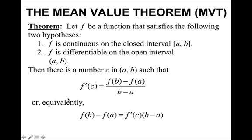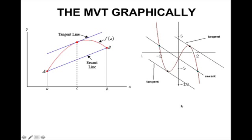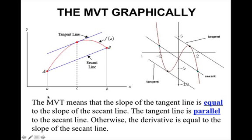Or equivalently, you can say that f(b) minus f(a) equals f′(c) times (b minus a). That's just multiplying (b minus a) on both sides. So what this means graphically is that the slope of the tangent line is equal to the slope of the secant line through the endpoints — the tangent line is parallel to the secant line. Otherwise stated, the derivative is equal to the slope of the secant line.